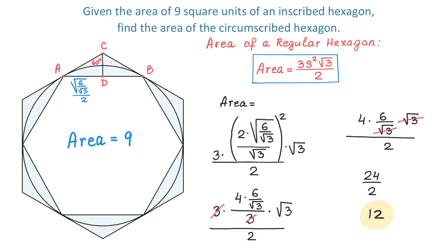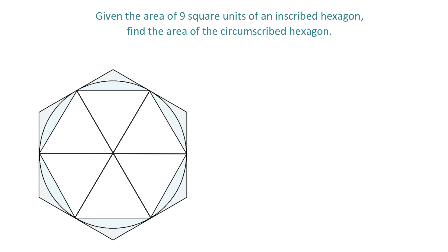Please let me know in the comments if you can find this area using any other methods. What if you divide the inscribed hexagon into 6 equal equilateral triangles? You could find the area of each by dividing 9 by 6. What if we split one of those triangles into 3 equal triangles — can we show that the area of one equals the area of the top triangle? Let me know in the comments below, and thank you for watching!